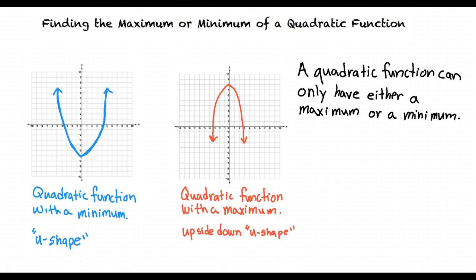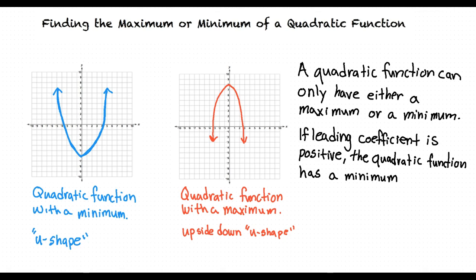But how would we find out if a quadratic function has a maximum or minimum just by looking at the equation? We can find this out by looking at the function's leading coefficient. If the leading coefficient is positive, then the function will have a U shape, and therefore have a minimum. If the leading coefficient is negative, then the function will have an upside-down U shape, and therefore have a maximum.